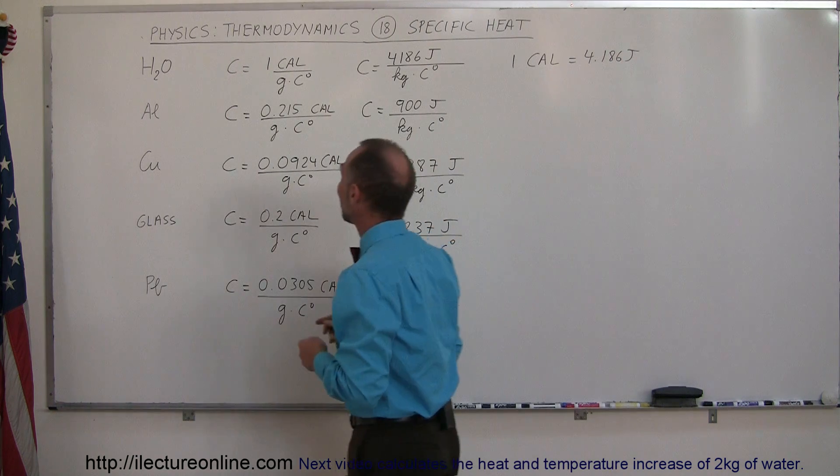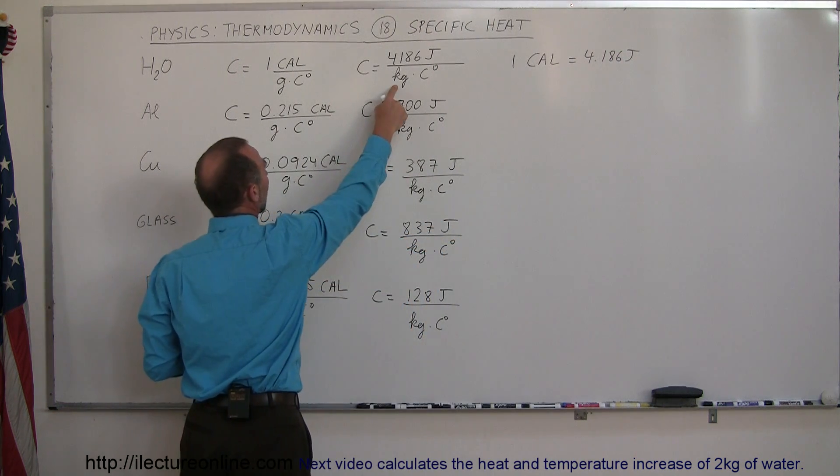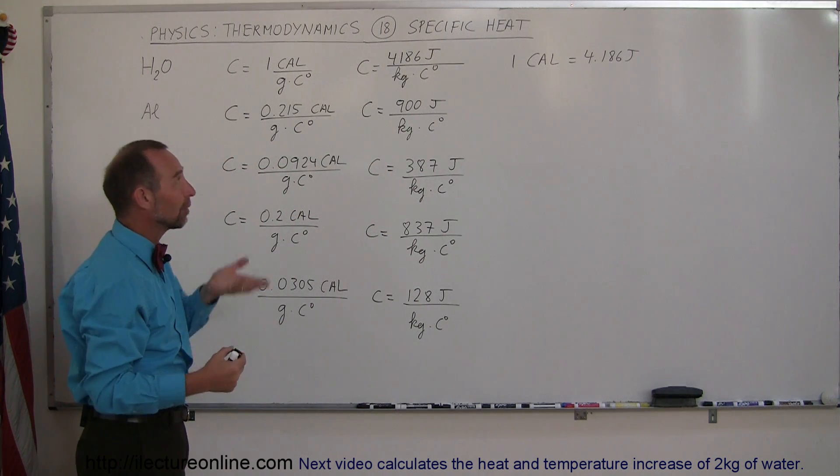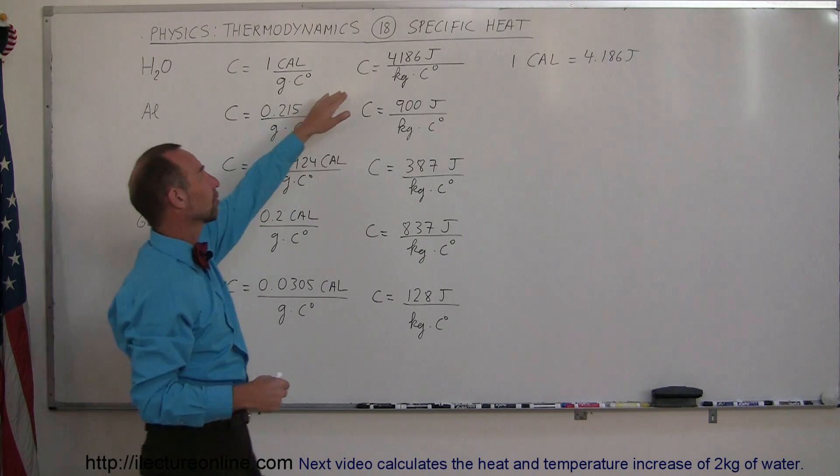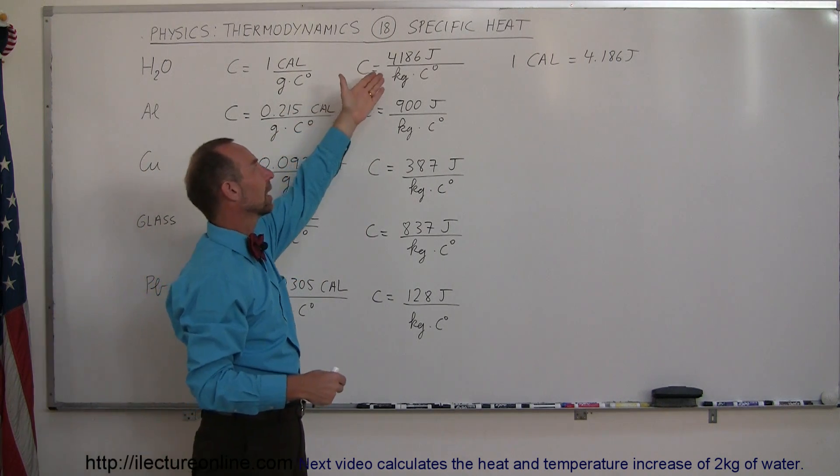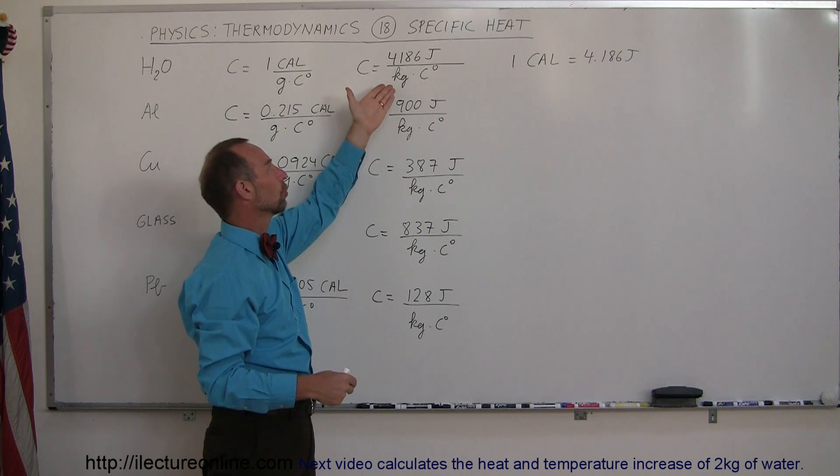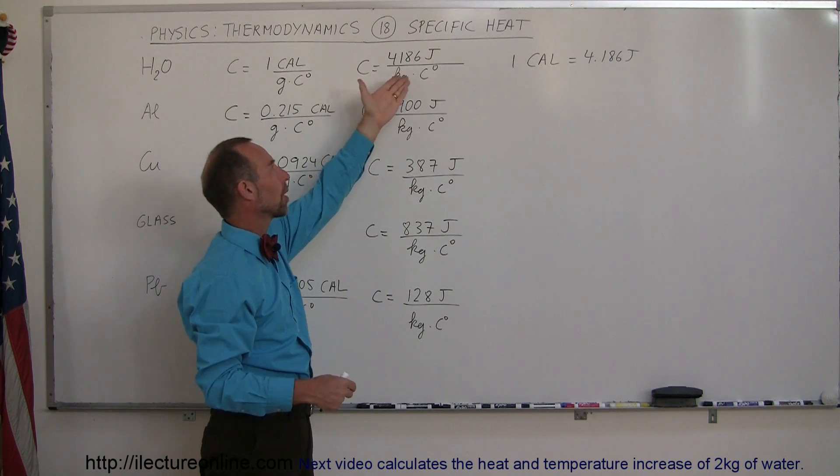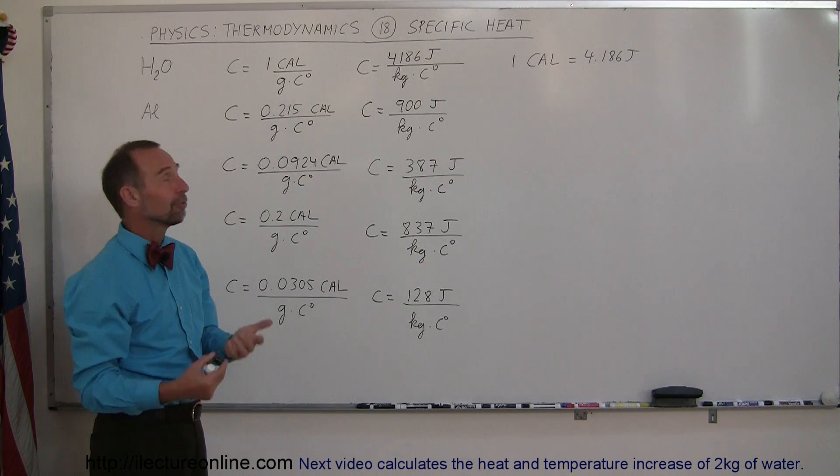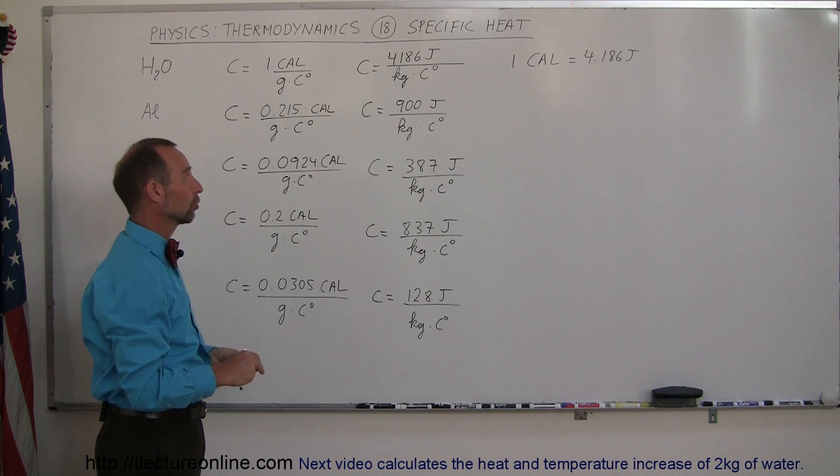If we take a thousand times as much water—that's a kilogram—we would need a thousand times as much heat to raise it by one Celsius degree. That's why when we convert to joules, we say you need 4,186 joules to increase the temperature of one kilogram of water by one Celsius degree.